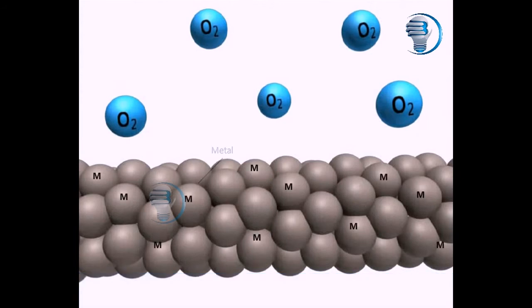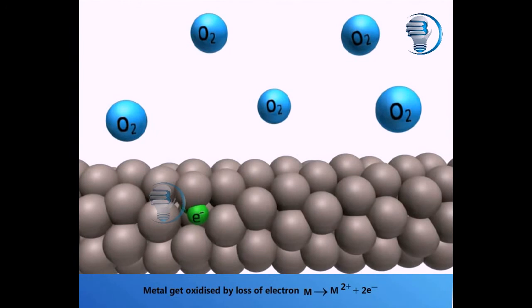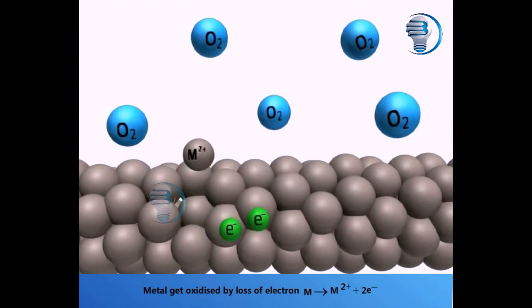Metal. Metal gets oxidized by loss of electrons. The metal ion M gives M²⁺ plus 2 electrons: M → M²⁺ + 2e⁻.